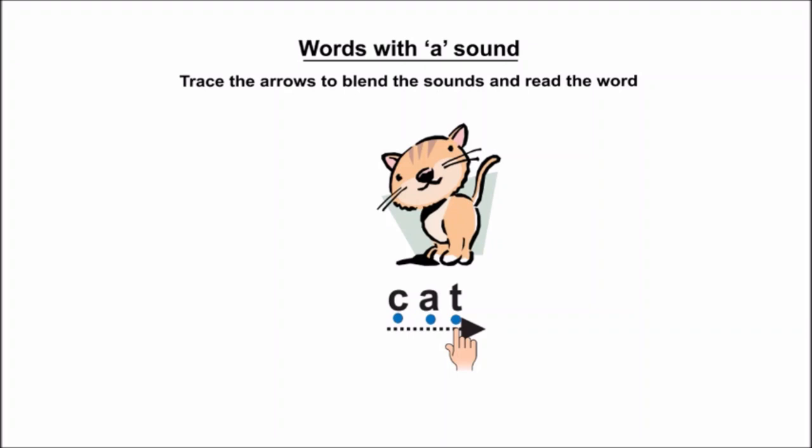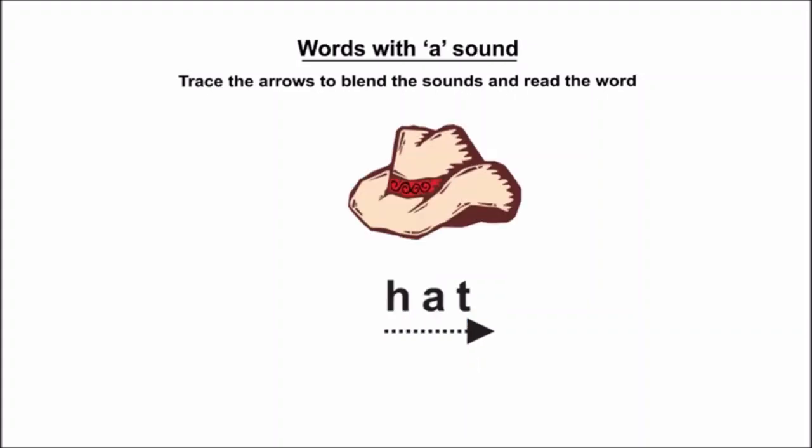Now let us read the next word. What is the first sound here, children? H. So one dot for H, one dot for A, and one dot for T. Now let us join all the three sounds to read the word. H, A, T, Hat. Read one more time. H, A, T, Hat.